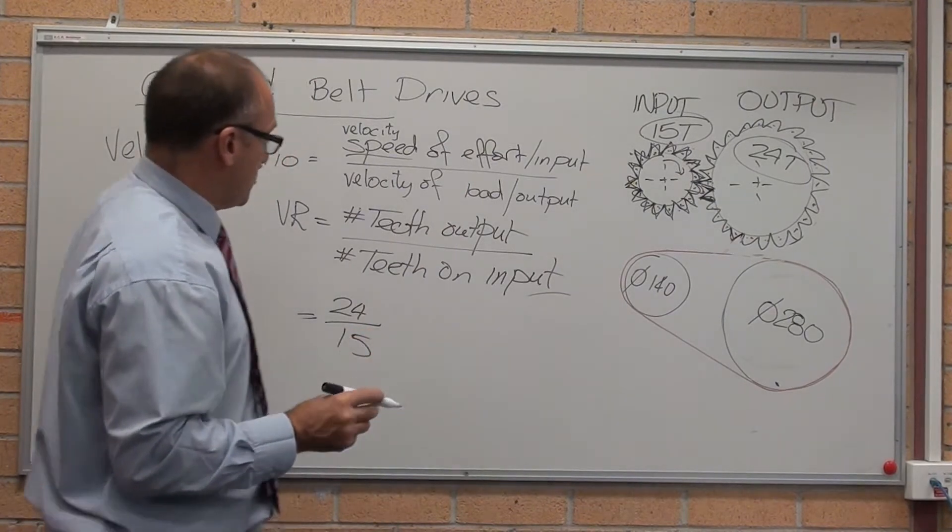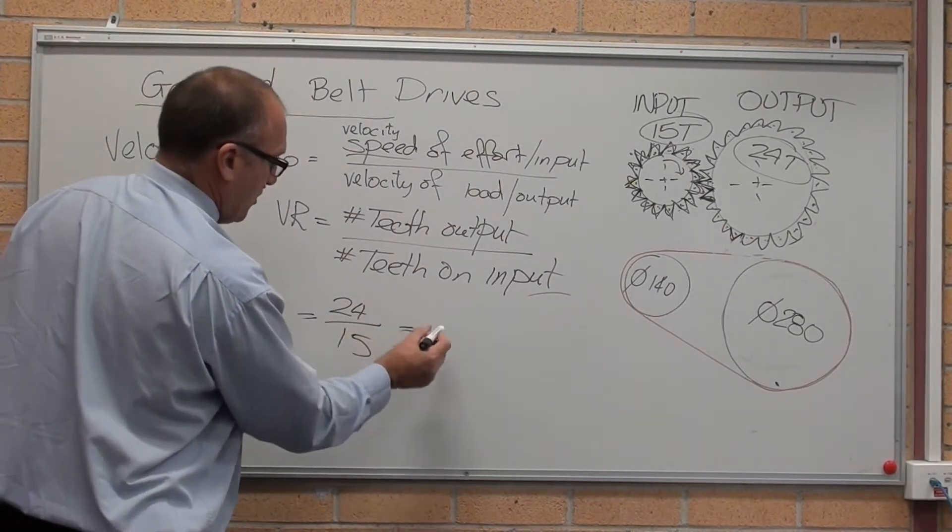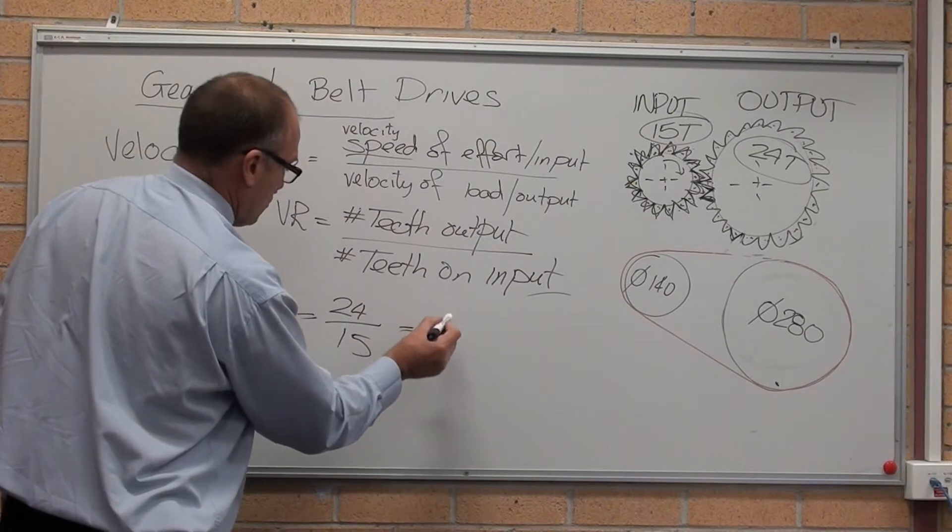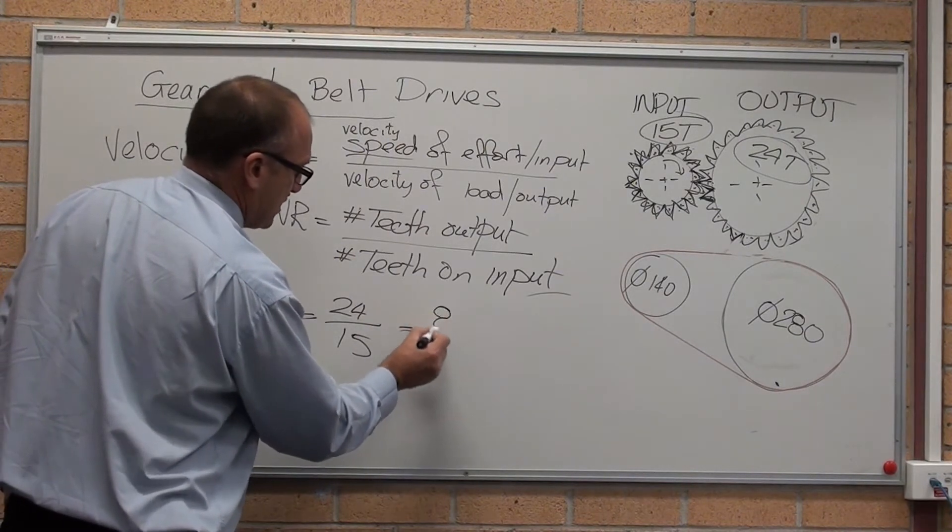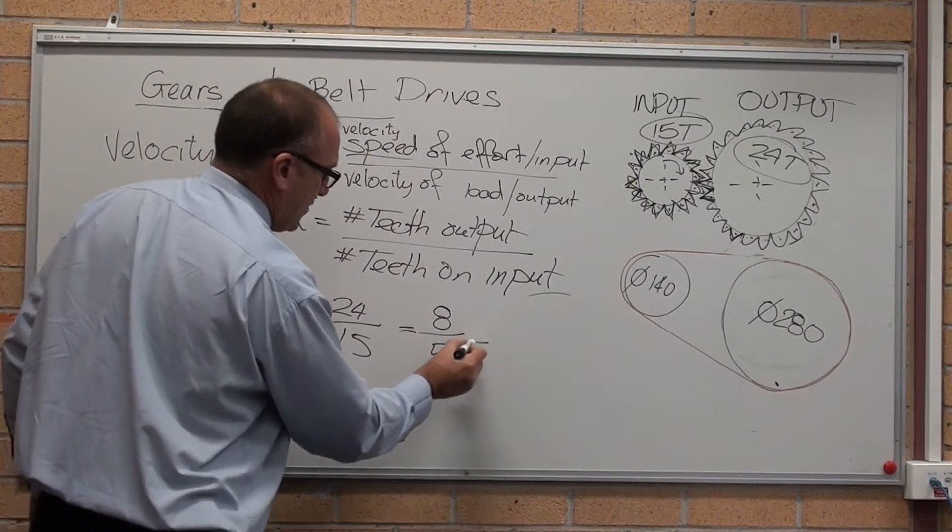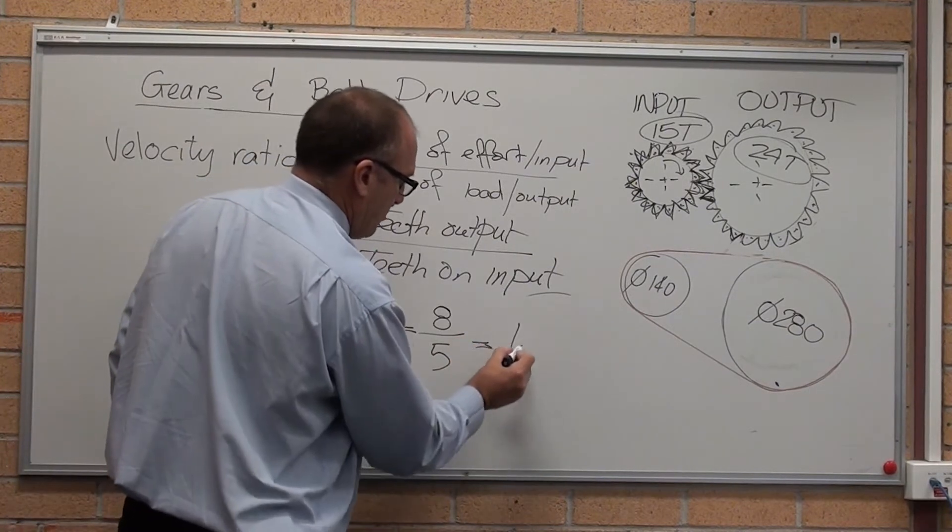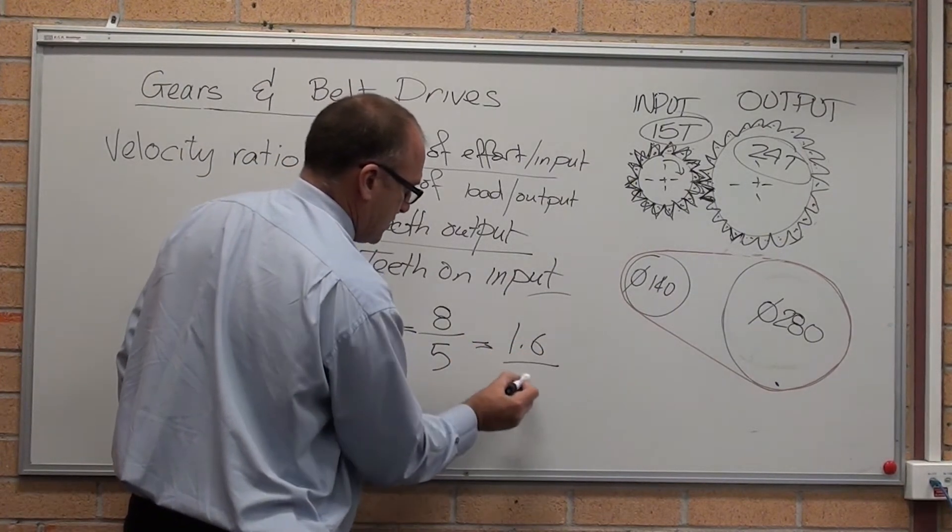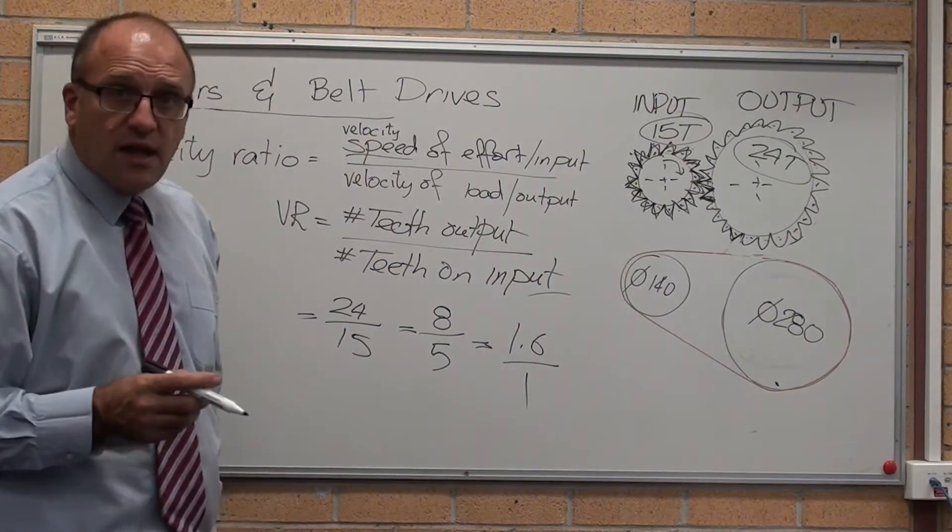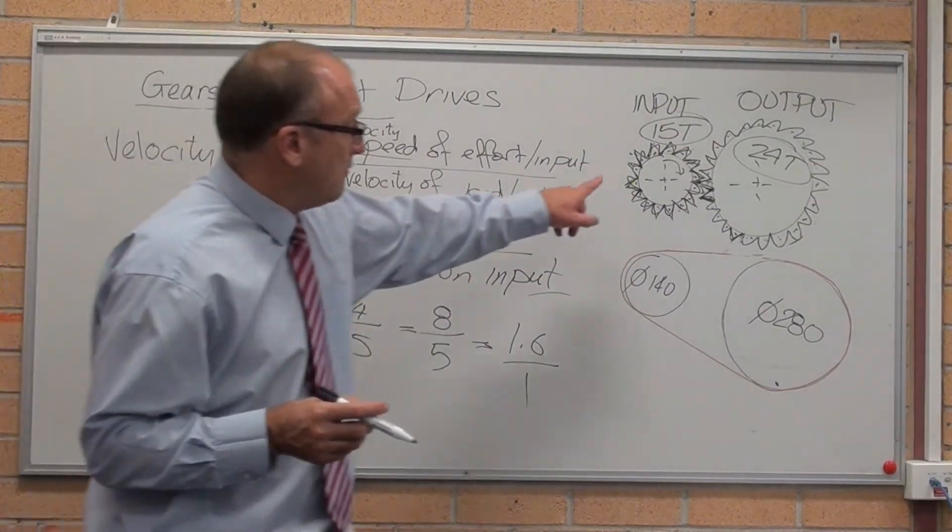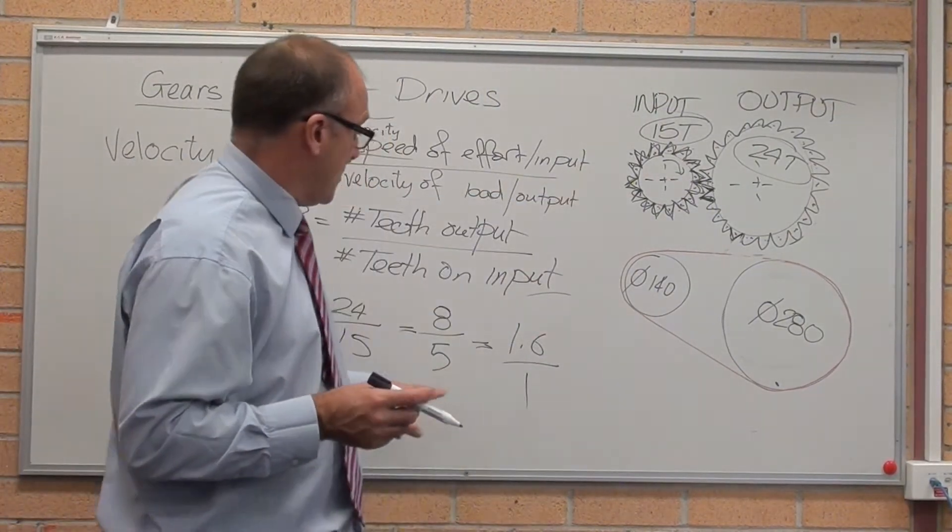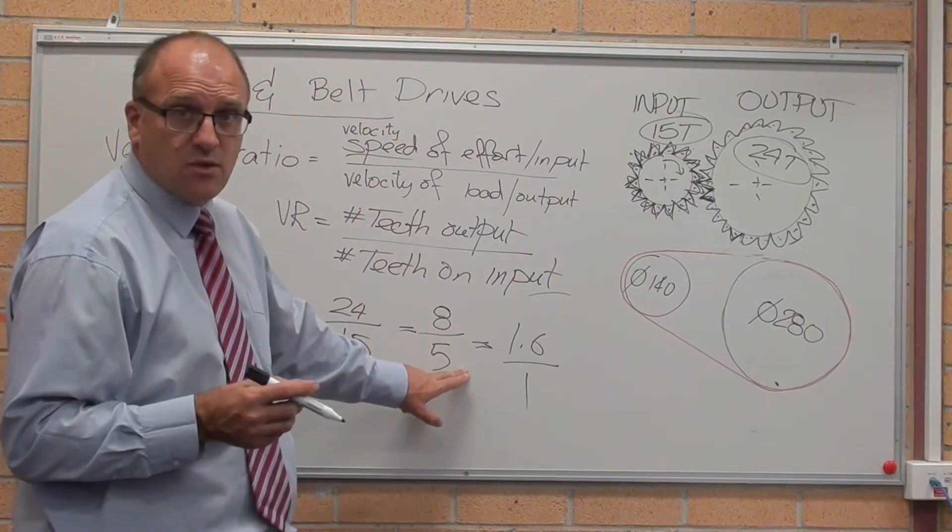The ratio is 24 to 15. You just reverse the number of the teeth. So this is spinning. Let's just divide top and bottom by 3. 24 divided by 3 is 8. Bottom is 5 equals 1.6. That's your velocity ratio of this gear system. 1.6 as to 1.